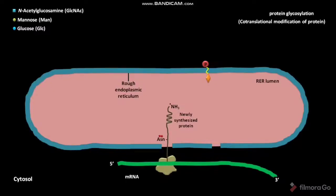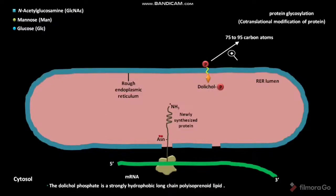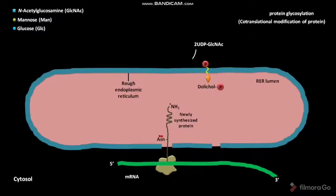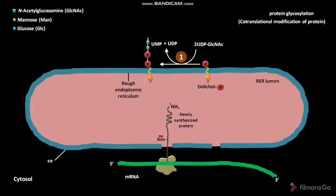The RER membrane has dolicol phosphate. The dolicol phosphate contains 75 to 95 carbon atoms and is a strongly hydrophobic long-chain polyisoprenoid lipid. In a biochemical reaction, the cytosolic 2-UDP-GlcNAc is converted into UMP and UDP. In the same reaction, two GlcNAcs are added to the dolicol phosphate to form an incomplete core oligosaccharide. This is the first step of protein glycosylation, occurring on the cytosolic phase of the RER. The antibiotic tunicamycin usually blocks this first step.